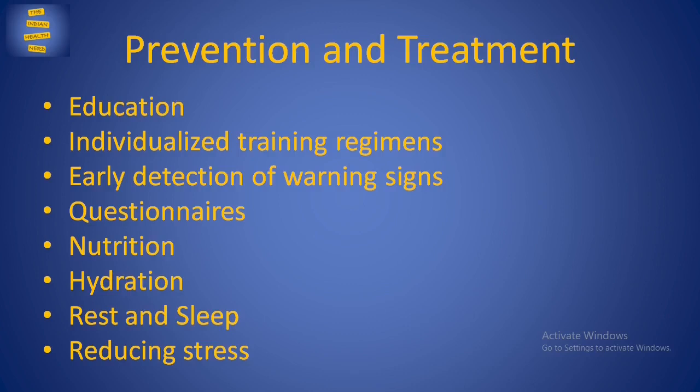What are the prevention and treatment strategies for overtraining syndrome? The primary aim of preventing the development of overtraining syndrome is to avoid excessive training that exceeds the body's ability to recover. This begins with the education of coaches and athletes about the risk factors that may lead to the development of overtraining syndrome.